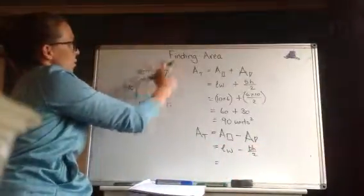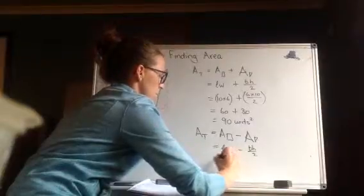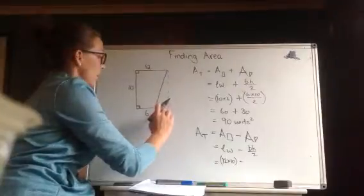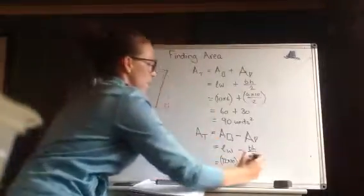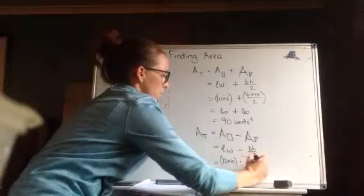Length times width, twelve times ten. Take away, base times height, this bit is a base, so that's six. Height is ten divided by two.